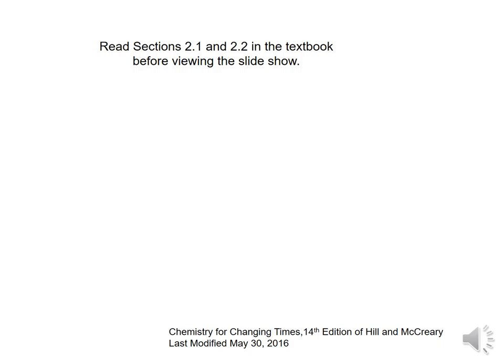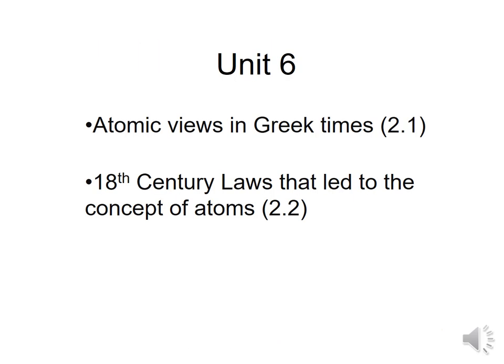Welcome to the slideshow for Unit 6. Unit 6 deals with a little bit of very early history of the atom and some 1800s developments trying to understand how compounds are made. This covers sections 2.1 and 2.2 in the textbook — you may want to read those before or after the PowerPoint. In Unit 6 we'll look at two things: atomic views from Greek times, and the laws of the 19th century that led to our modern concept of atoms.